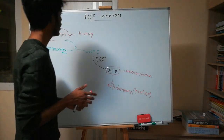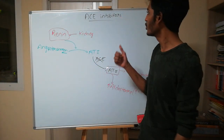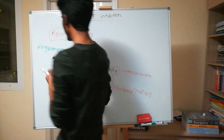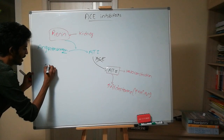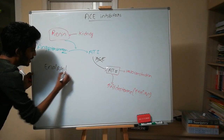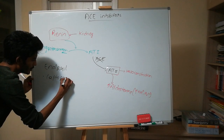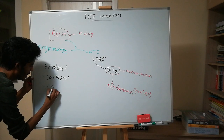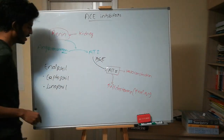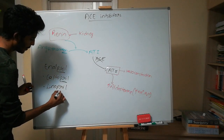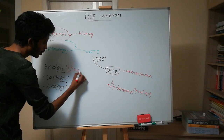So these are the two ways ACE inhibitors can decrease blood pressure. They are used for treating hypertension. The names of ACE inhibitors all end with '-pril': enalapril, captopril, lisinopril. These are the drugs which work as ACE inhibitors.